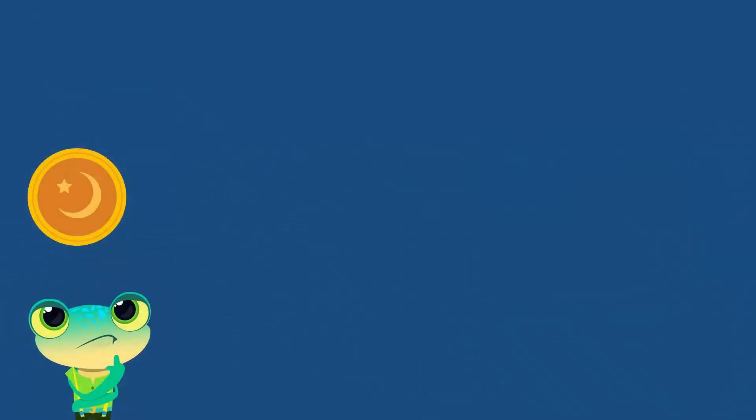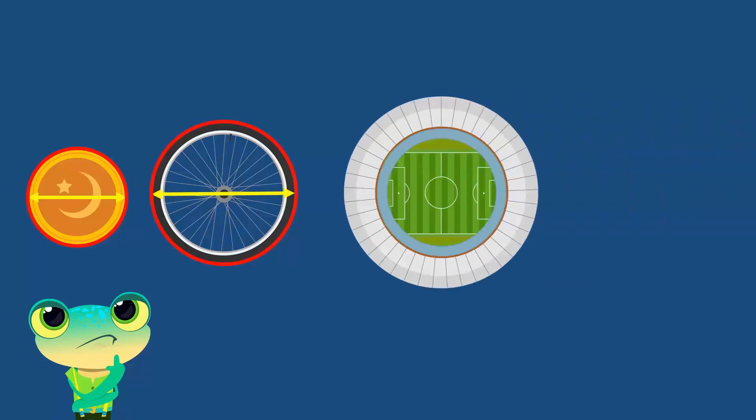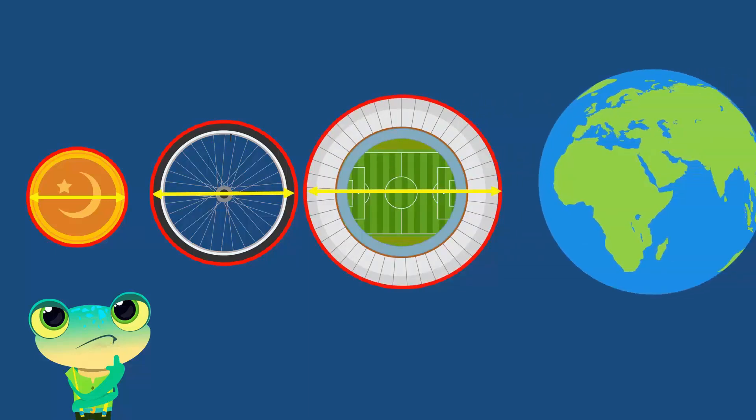What do we get when we divide the circumference of this coin by its diameter? What about this wheel, circumference and diameter, or this stadium, or the Earth?